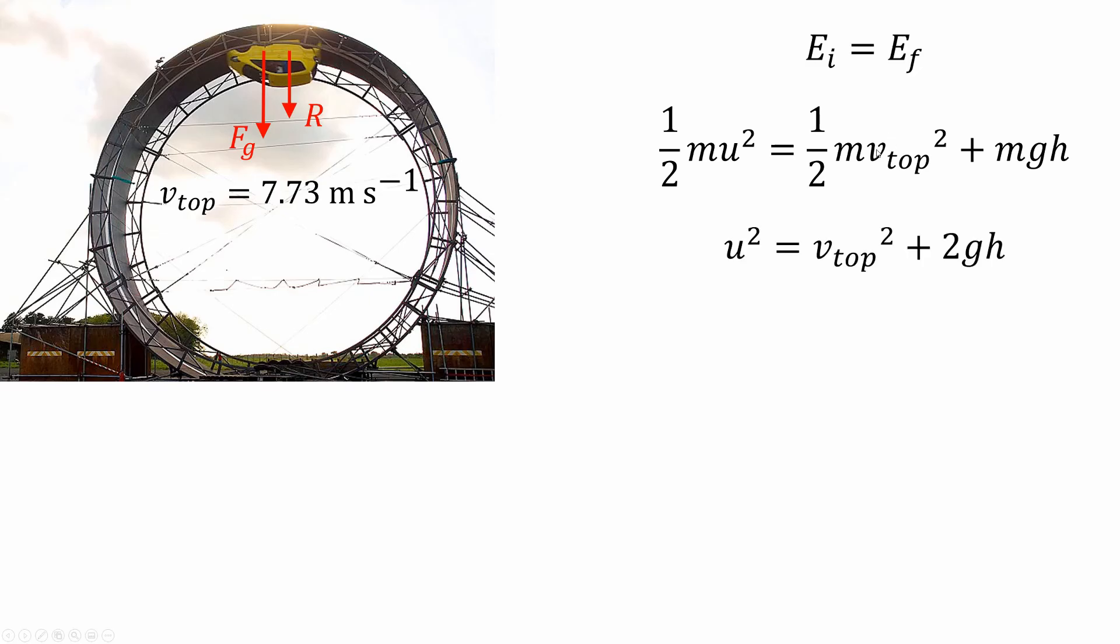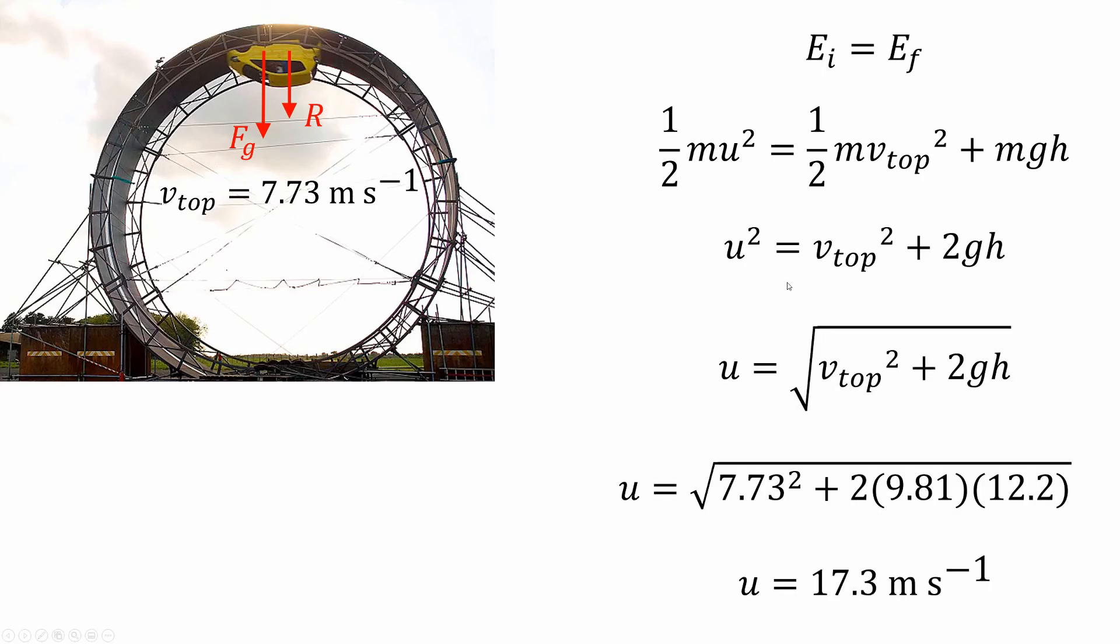Alright. And conservation of energy being what it is, mass will go away since there's no elastic stuff. And now it's just an algebra problem where I solve for u, substitute my values, and I find I would need to go more than twice as fast coming in, 17.3 meters per second.